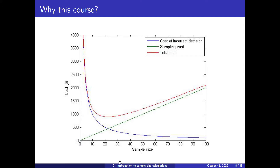On the other side, there is another cost that is much more difficult to measure — the cost of taking an incorrect decision. If you have a very high sample size, there is very little probability of making a false positive or a false negative. For instance, there is very little probability that if the vaccine is effective, you miss that effect, or that if it is not effective, you think it is. The larger the sample size, the smaller the probabilities of making these mistakes.